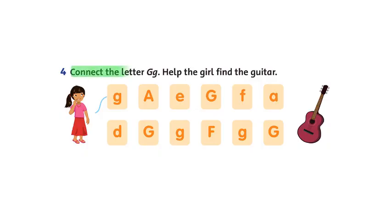Bây giờ chúng ta hãy cùng nhau nối những chữ G lại nhé. Connect the letter G. Khi chúng ta nối đến chữ G cuối cùng là chúng ta giúp cô bé tìm được chiếc đàn guitar đó. Help the girl find the guitar.